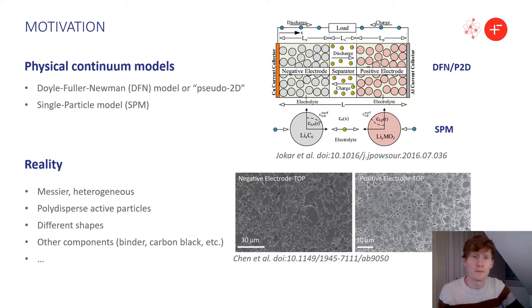Assuming only one size is just done for computational simplicity, since in reality things are much messier and heterogeneous. The active particles are polydispersed, meaning a wide range of sizes are present. They're all different shapes, and there are other components not modeled, such as binder and carbon black.